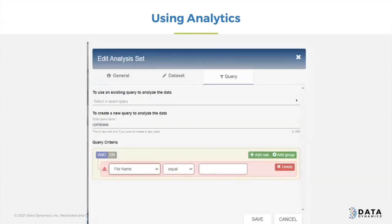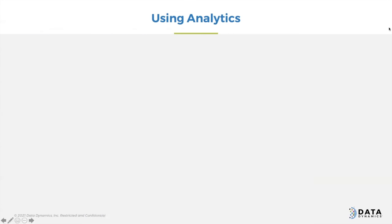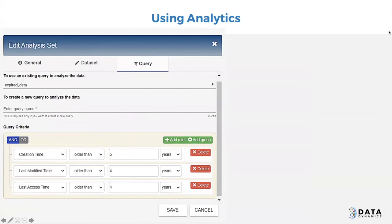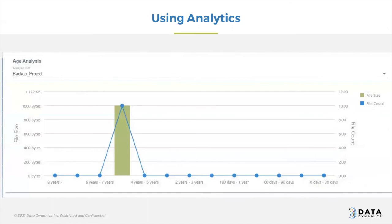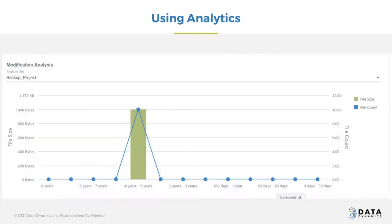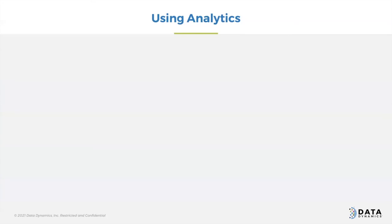You save that, it updates the data set, and then you get a display. In this particular case, what I've done is I've just created creation time older than five years, last modified time older than four, last access time older than four. When I run that, I get a series of graphs. This is a graph of the result of the first data set — it gives you not only how many files in file count, but also file size, so you can have an understanding of how this data is affecting your data set. Similar views exist for modification and activity.